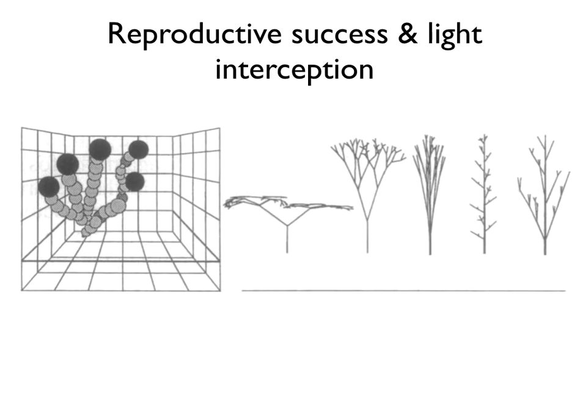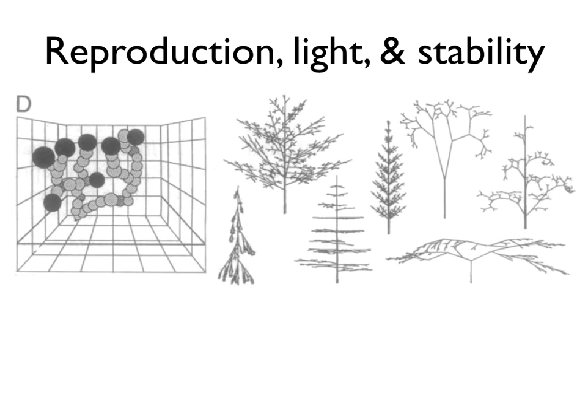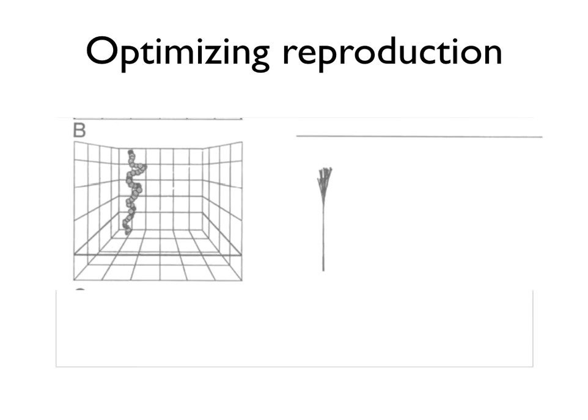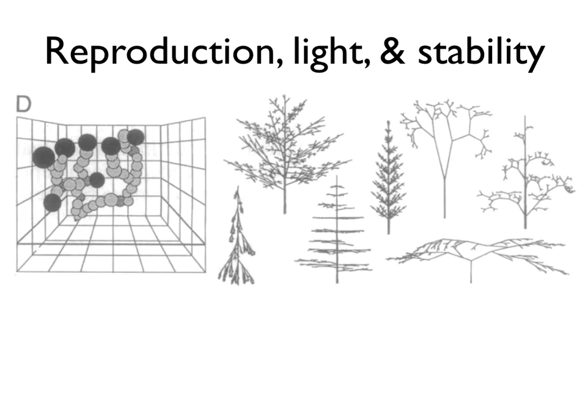This is reproductive success and light interception, and this is definitely the coolest. When you combine all three of them, all of a sudden you start getting morphologies that look a lot more similar to trees that you would see outside today. There's a lot more morphologies that are basically equally optimum in the fitness landscape, so we go from one peak in the fitness landscape here to many, many peaks in the fitness landscape here.